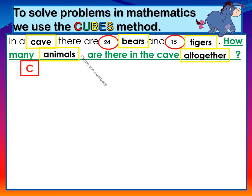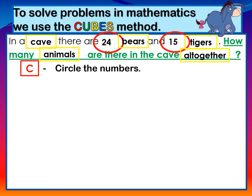C is for circle. Circle the numbers: 24 and 15. U is for underline. Underline the question: How many animals are there in the cave all together?